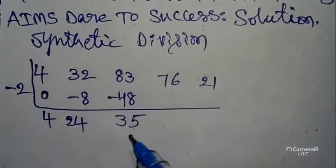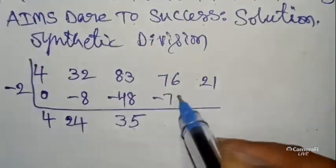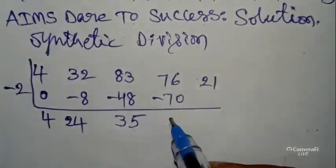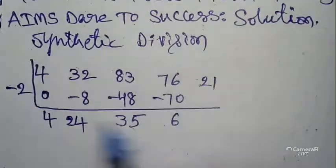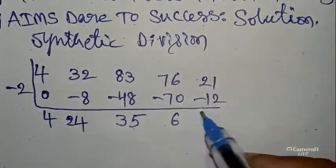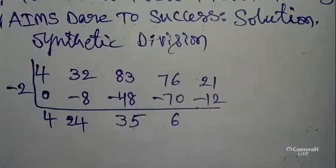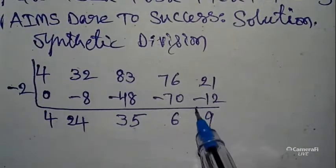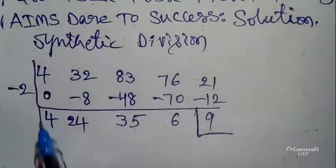Next, 83 - 48 = 35. 35 × -2 = -70. 76 - 70 = 6. 6 × -2 = -12. 21 - 12 = 9.